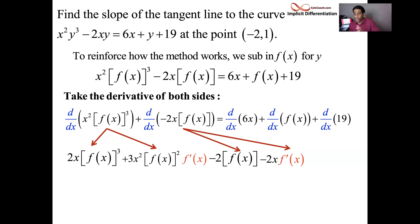You have taken the derivative of the left-hand side. Each term had a product rule, so they got two separate terms. But now when it comes to the right-hand side, derivative of 6x is just a 6. Derivative of f of x, f prime of x. Derivative of 19, zero.